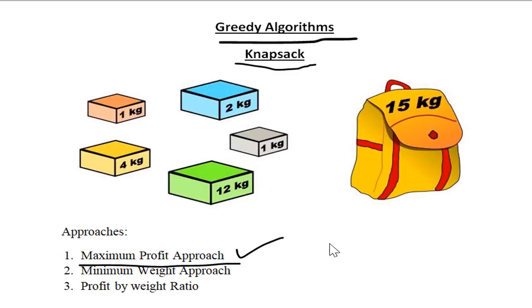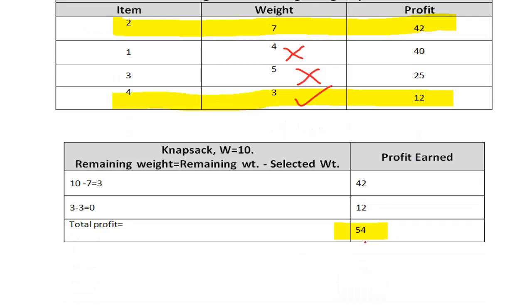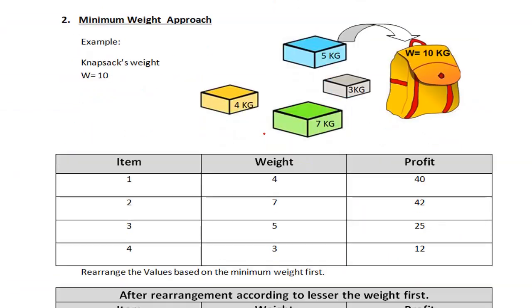Welcome back everyone. We were looking at greedy algorithms and the knapsack problem. We already saw the maximum profit approach, where we got a profit of 54 by selecting item 2 with weight 7 and item 4 with weight 3. Now we'll see the next approach, called the minimum weight approach.